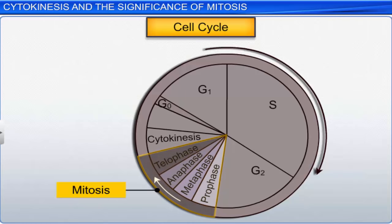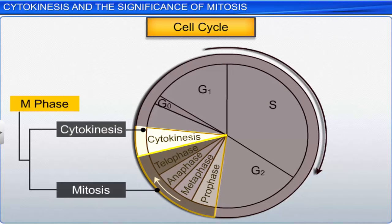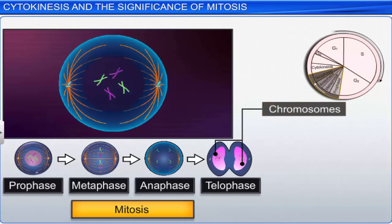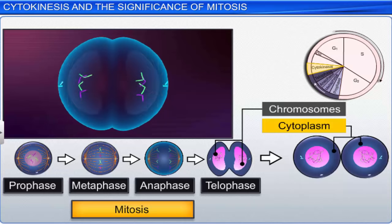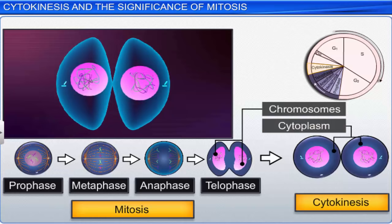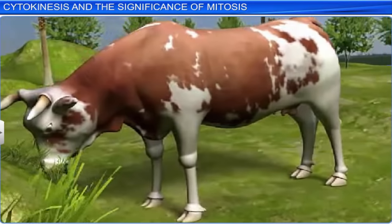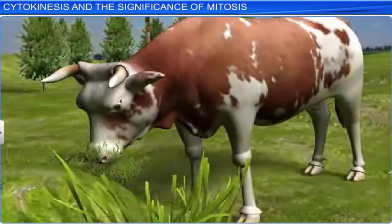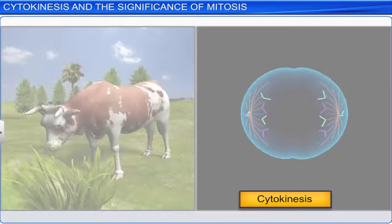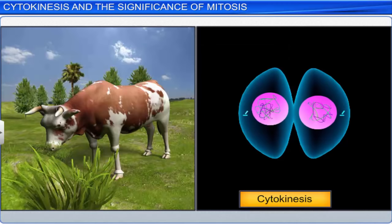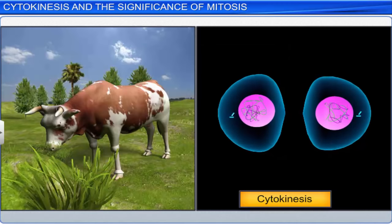Mitosis, or karyokinesis, along with cytokinesis, defines the M phase of the cell cycle. Mitosis results in the segregation of duplicated chromosomes into two daughter nuclei, and is followed by the division of cytoplasm — that is, cytokinesis — to produce two daughter cells. However, the process of cytokinesis is different in animal and plant cells. In animals, cytokinesis is initiated by the formation of a furrow in the plasma membrane, which gradually deepens to join the center of the cell, dividing the cytoplasm into two.